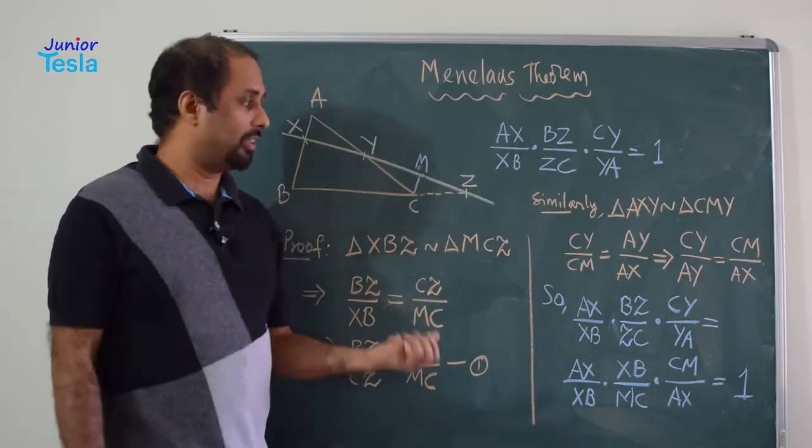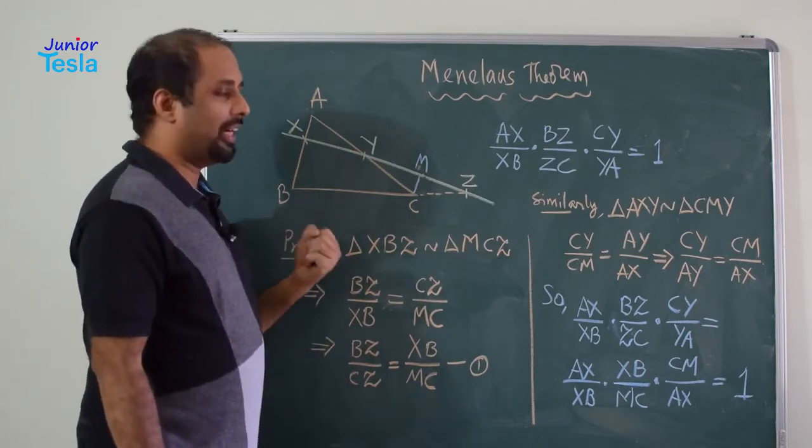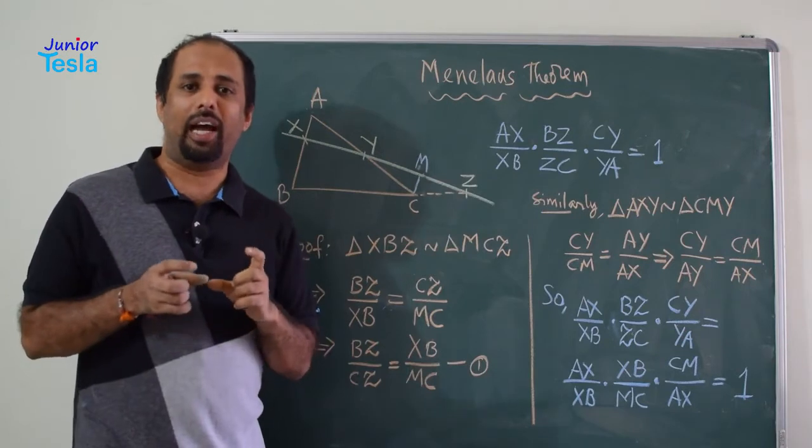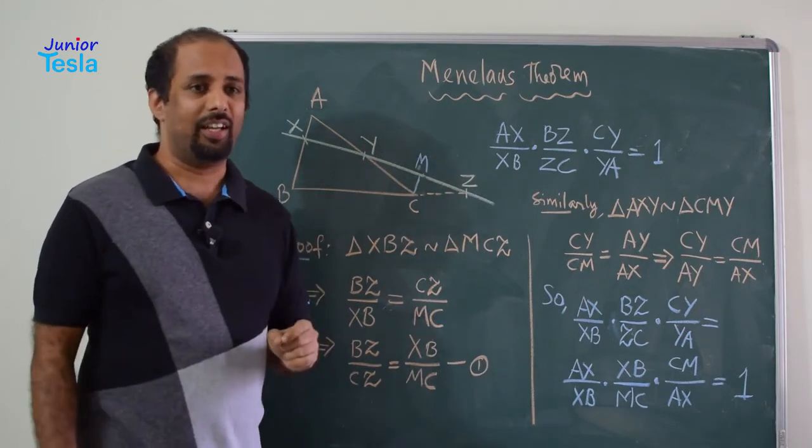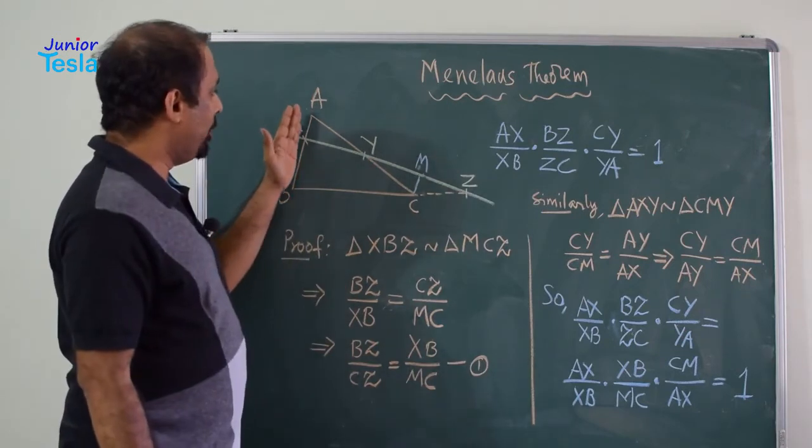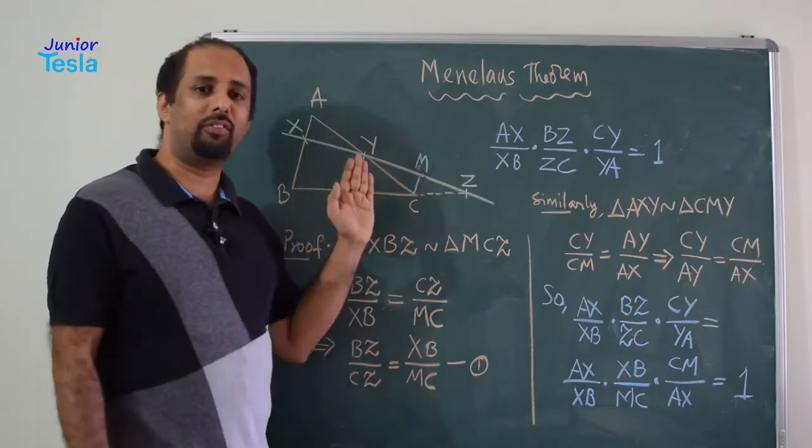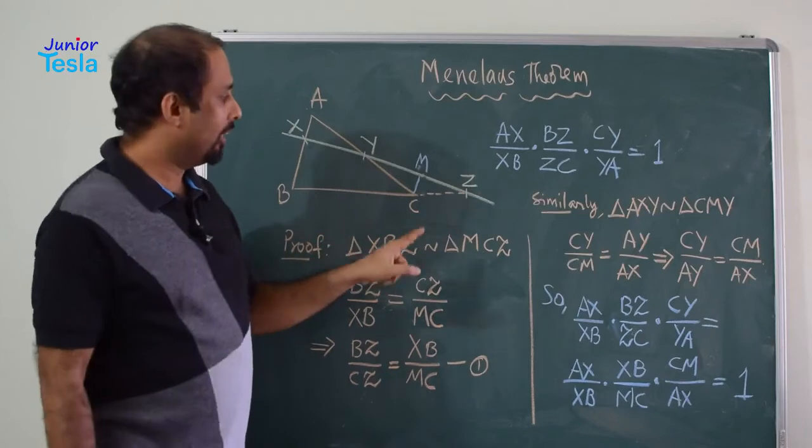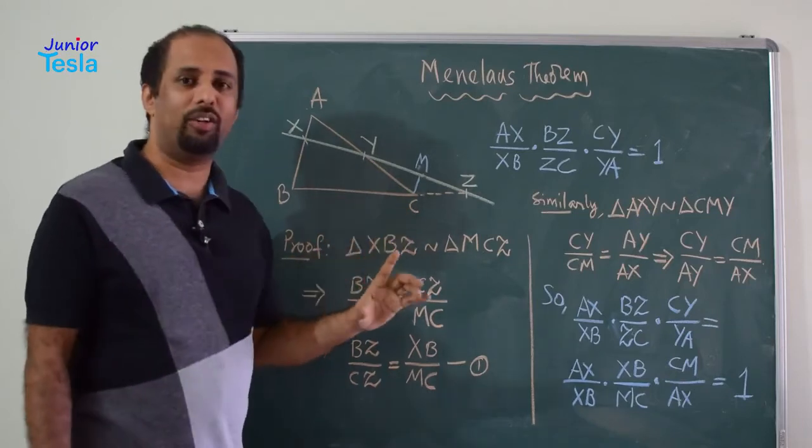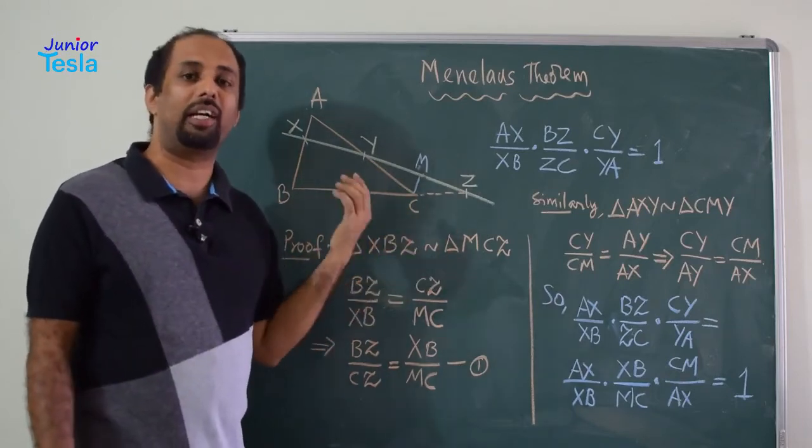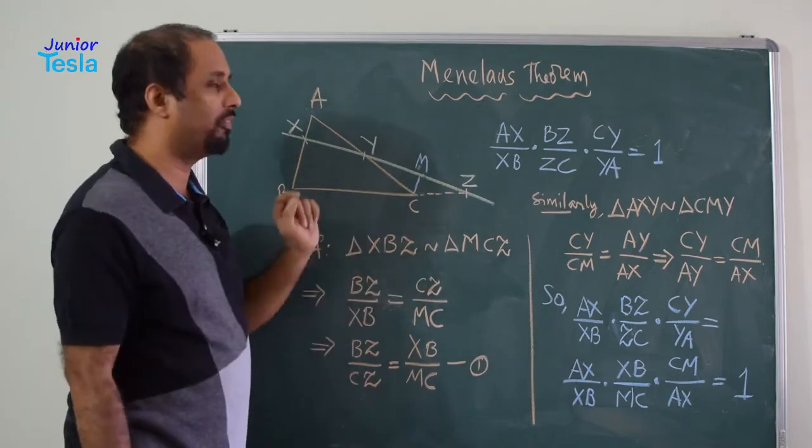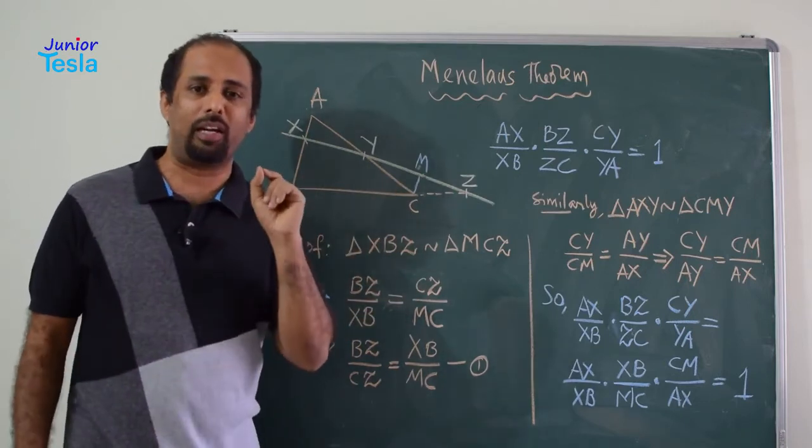Now, how do we prove this theorem? To prove that, what I am going to do is, I am going to add a small construction here. I am going to take AB parallel to CM. So, I am going to draw one line CM, which is parallel to one of the sides AB. CM is actually not there in the original theorem. It is only a construction. So, that is why I have drawn a different color. CM is parallel to AB.